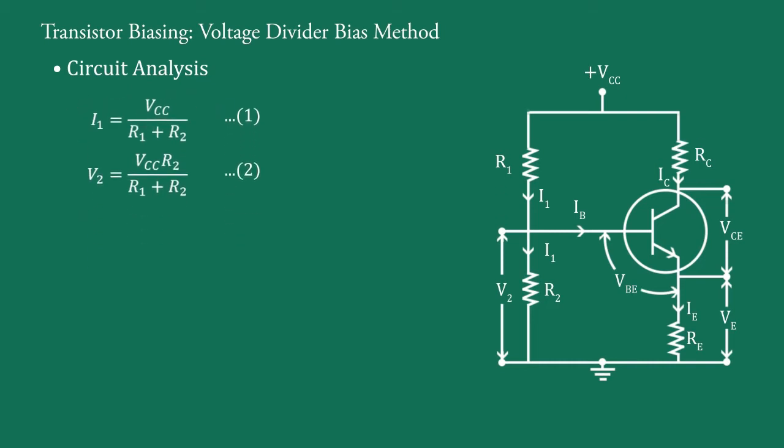Now, applying Kirchhoff's law to this base emitter loop, we have V2 equal to VBE plus IERE. Since IE equal to IB plus IC, IB is very very less than IC and therefore, we take IE equal to IC.